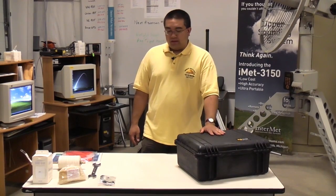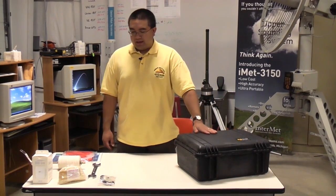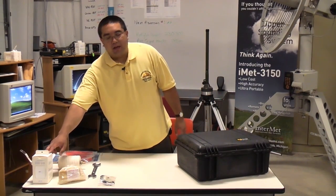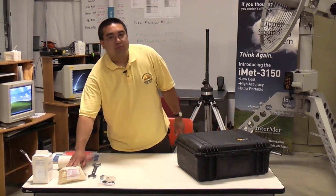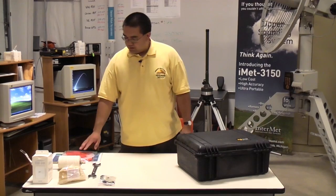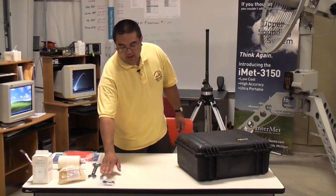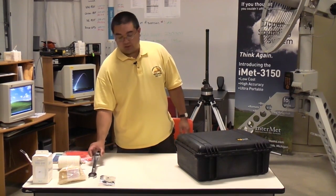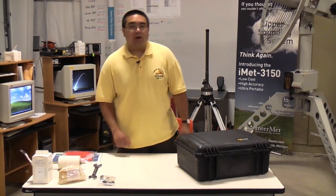With me I have the inflation kit inside this Pelican case. I have an IMet-1 radiosonde, a 350 gram balloon, a roll of string, parachute, and a derailleur. Optionally it's a good idea to have a 1⅛ inch wrench but it is technically not required.